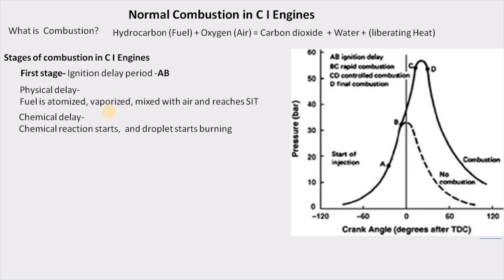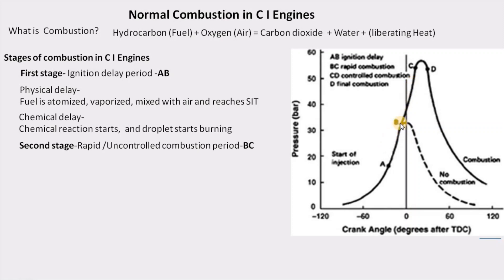In summary, in the first stage, fuel comes in, physical activities happen, and chemical activities occur to prepare the mixture to burn and burning starts. The second stage is called the uncontrolled combustion stage or rapid burning stage, from B to C. Point B is where combustion starts contributing to pressure rise and the combustion curve departs from the motoring curve, continuing to the peak pressure point C.